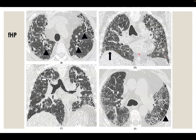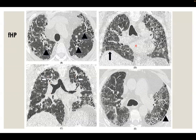Relatively spared lung bases — and this is not the apico-basal gradient we expect to see in typical UIP for IPF. Here again we see the bronchocentric distribution along the bronchovascular bundles. In this patient in the coronal view D and axial E at the level of the pulmonary arteries, we see bronchocentric distribution with presence of traction bronchiectasis, irregular reticulation, and ground glass along the bronchocentric distribution.